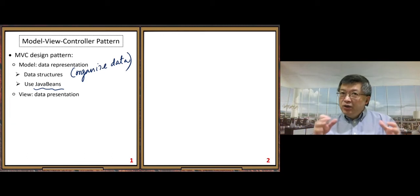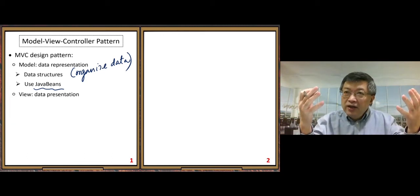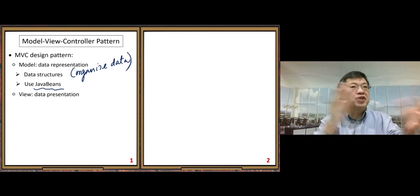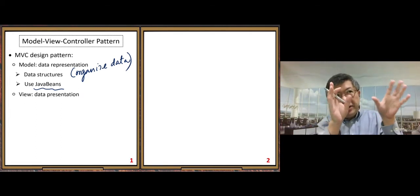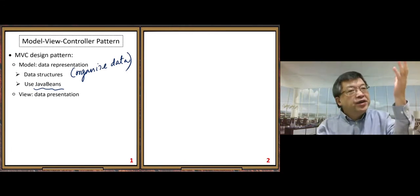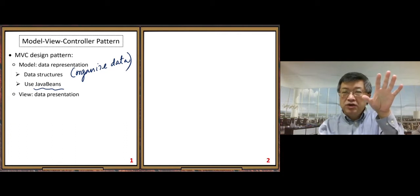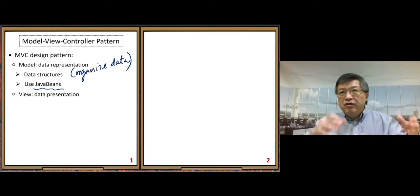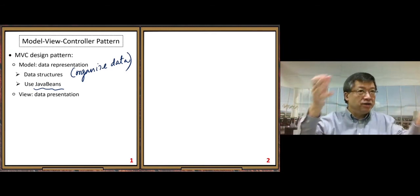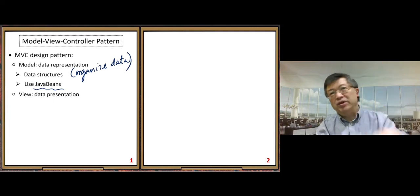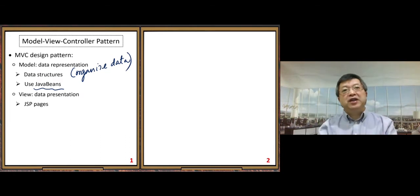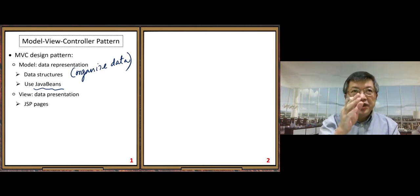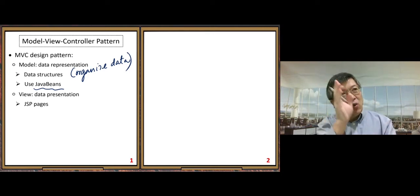The next component is View, which is for data presentation. Once you have the data, you need to present it in a special format for your customers so they can understand it. That's the front end of your web application, and it's very important. JSP pages are a commonly used way to do this data presentation.